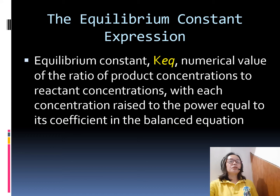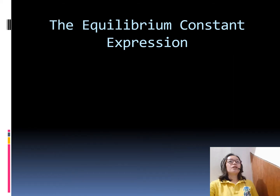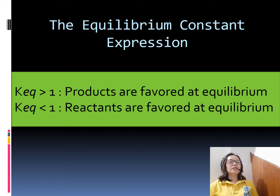The equilibrium constant expression is written as: Keq equals the concentration of products C and D raised to their respective coefficients, divided by the concentration of reactants A and B raised to their coefficients. Take note: if the value of Keq is greater than 1, products are favored at equilibrium. If the value is less than 1, reactants are favored at equilibrium.